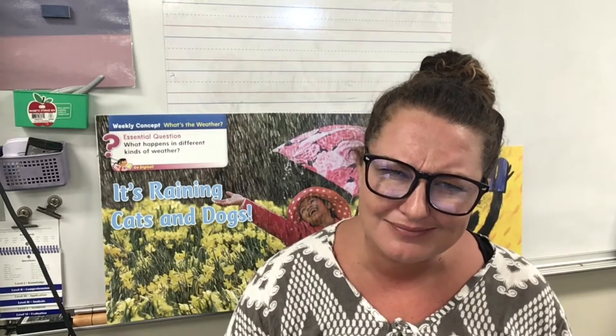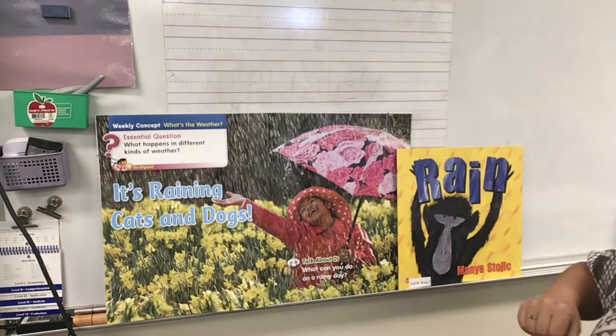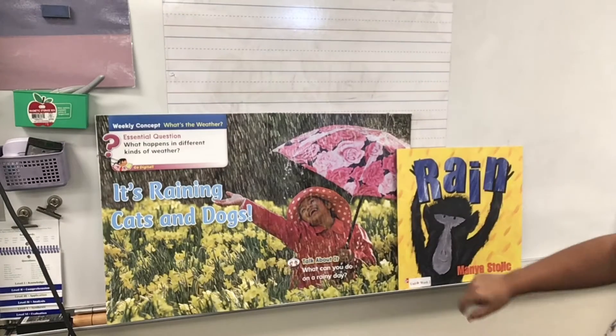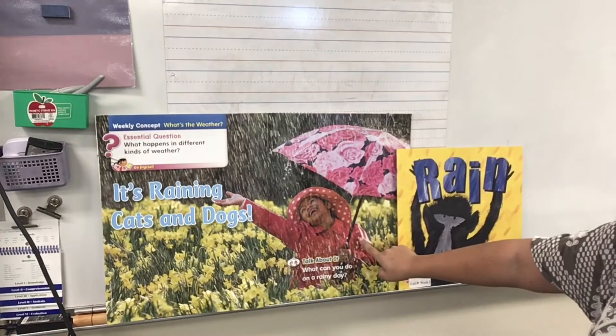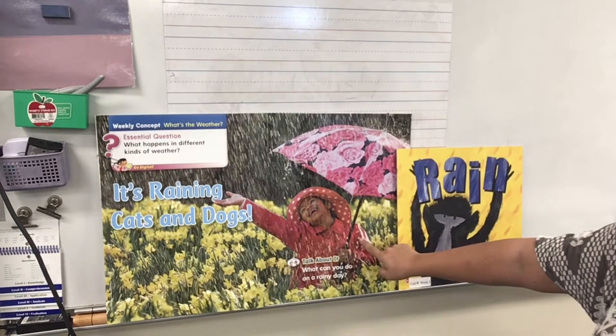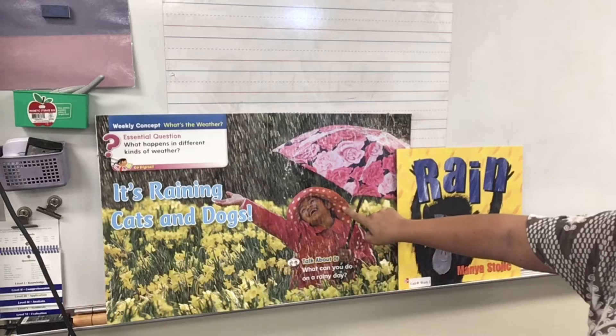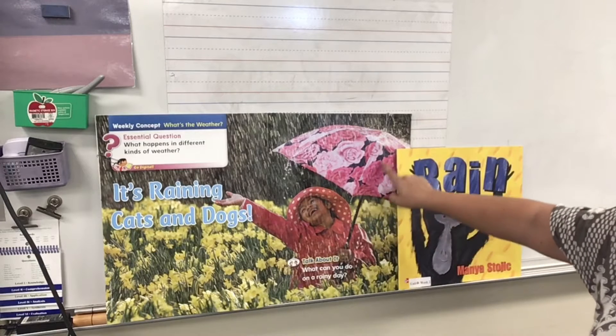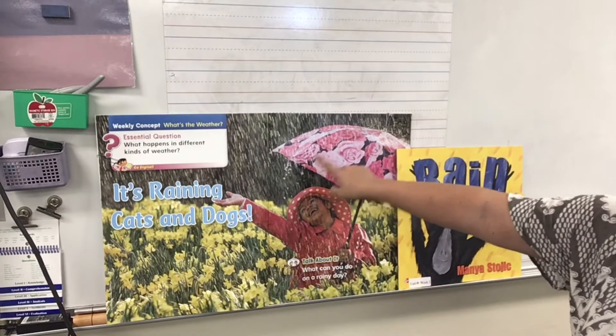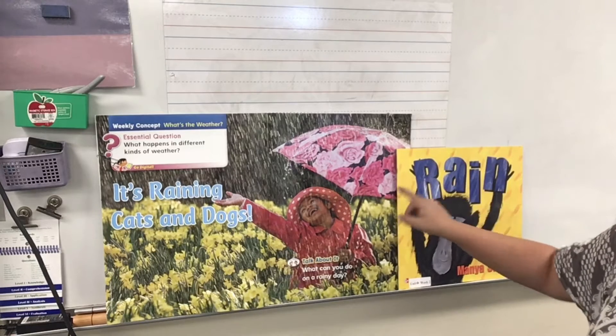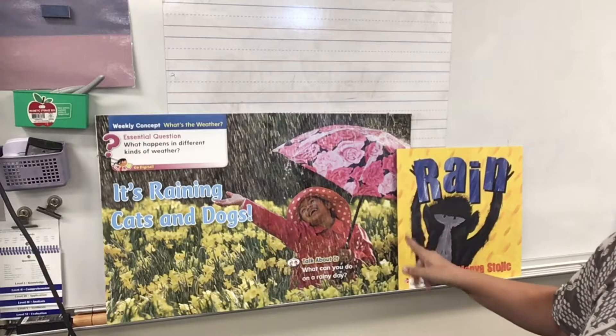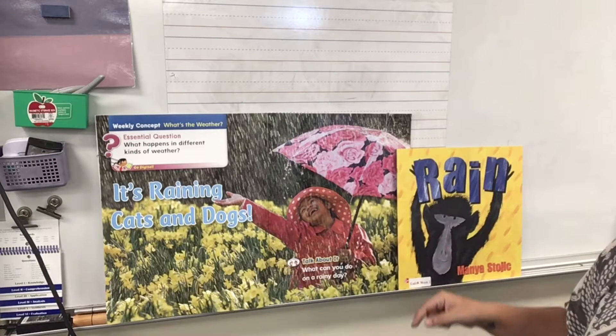What types of clothes might help keep you dry in the rain? Let's look at this picture. Maybe you might wear a jacket, a hat, and you might even use an umbrella. Those are all things that might help keep you dry when it's raining.